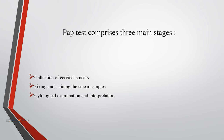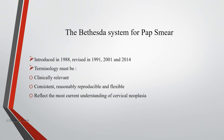The pap test comprises three main stages: collection of cervical smears, fixing and staining the smear samples, and cytological examination and interpretation, which is done by the Bethesda system for pap smear. It was introduced in 1988 and revised in 1991, 2001, and finally in 2014. The aim of the Bethesda system was that terminology must be clinically relevant, consistent, reasonably reproducible, and flexible, reflecting the most current understanding of cervical neoplasia.